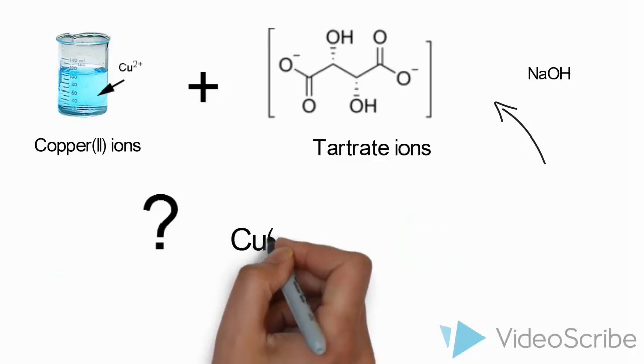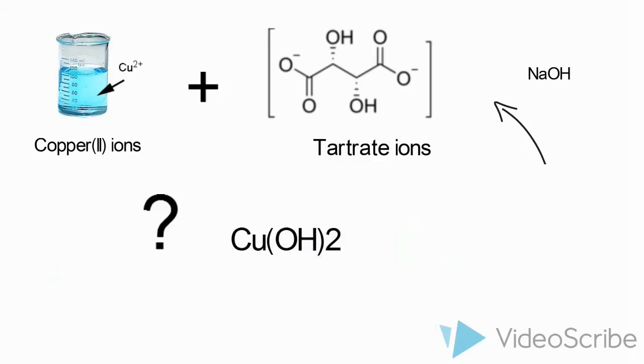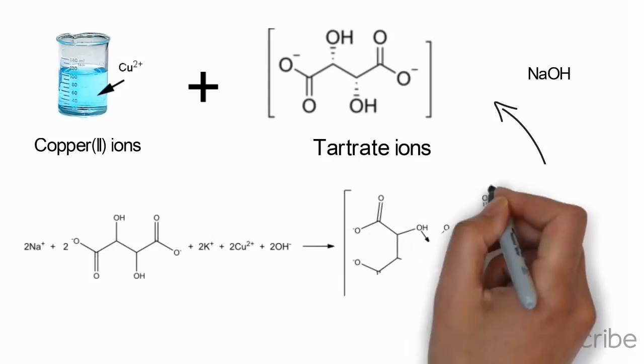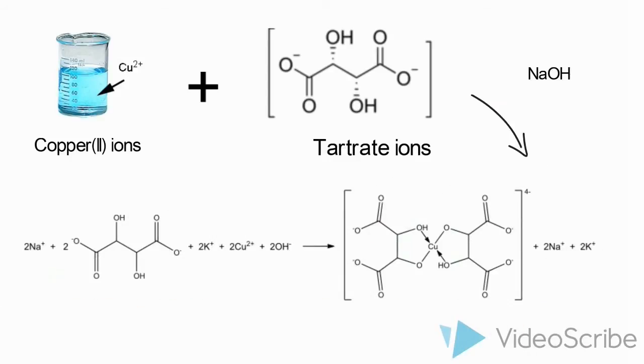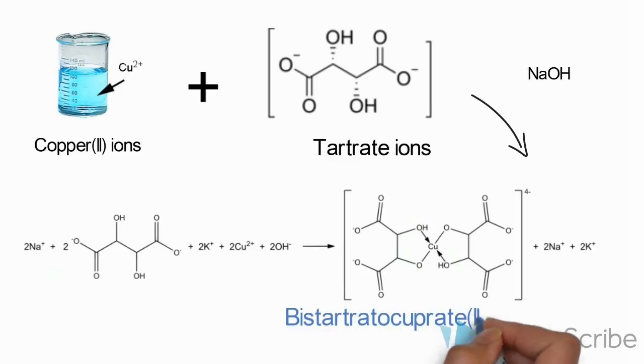The presence of tartrate ions prevent precipitation of copper 2 hydroxide because it chelates copper 2 ions and together they form the deep blue bis-tartrate cuprate 2 complex.